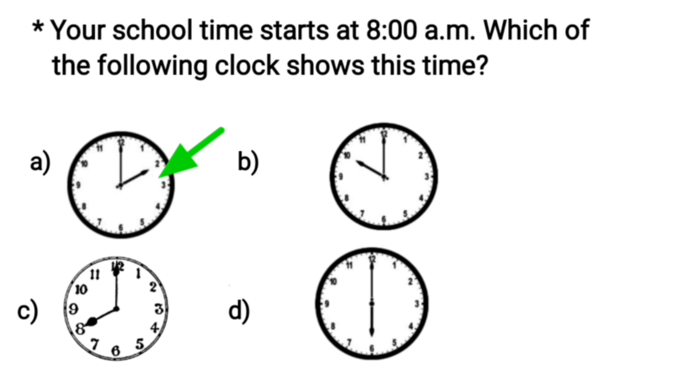We will start from option A. Here, what's the time children? Yes, it's 2 o'clock. And here in option B, the short hand is at 10 and the long hand is at 12. So, the time is 10 o'clock. This is not the correct time that we want. That's why, let's move to option C.